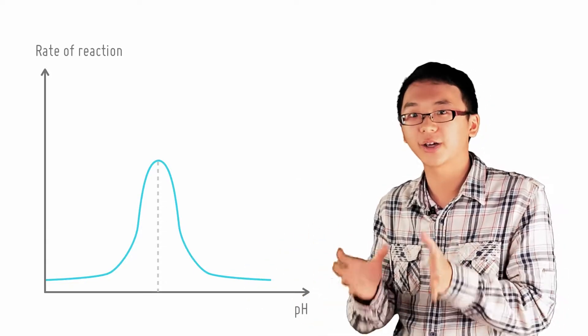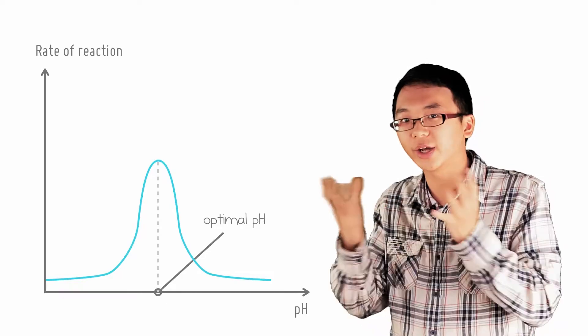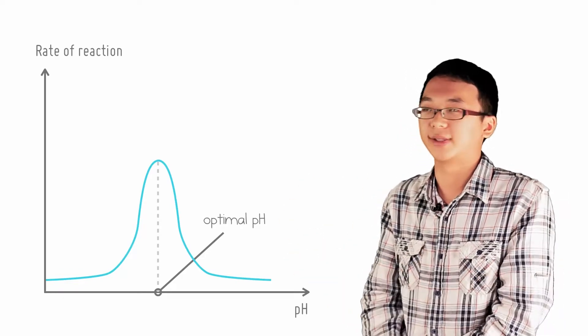Every enzyme has its own specific optimal pH at which its rate of enzymatic reaction is the highest, represented by the peak.